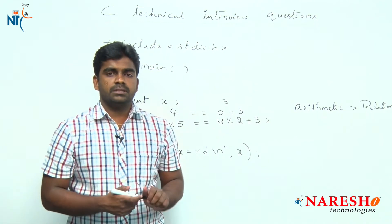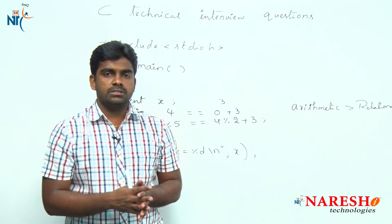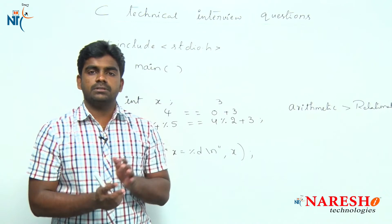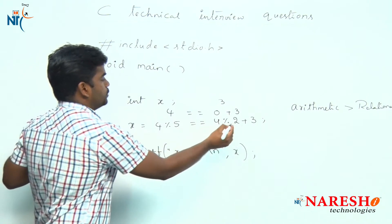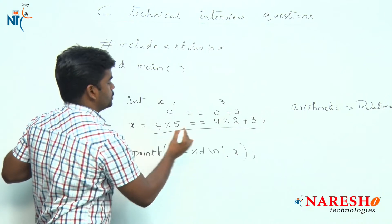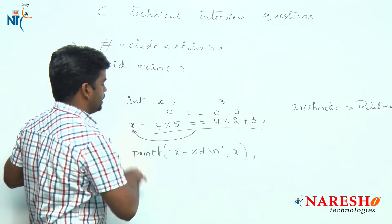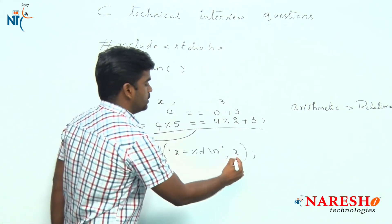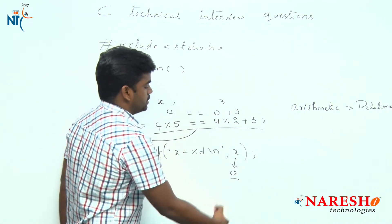Whenever the condition fails, the relation is false, then the relational operator will return 0. The value of this expression is 0. That will be stored into x. Finally, the value of x is 0.